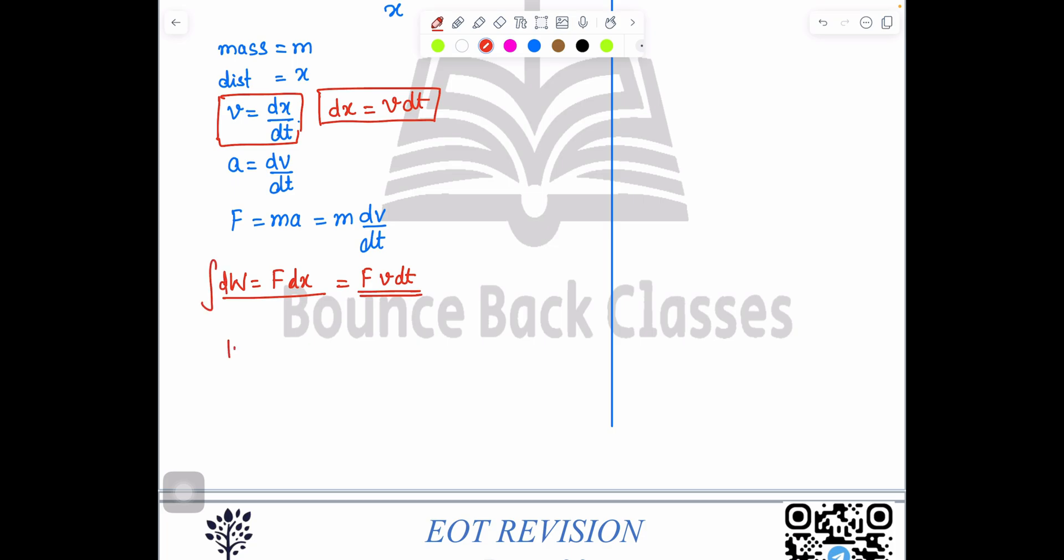Can I say initial to final position F? What are the values we have? What is the F? m dv over dt. And what I have instead of dx? What is the value? v dt. dt and dt can cancel. So what is the value left? Integration m v dv initial to final. Clear.